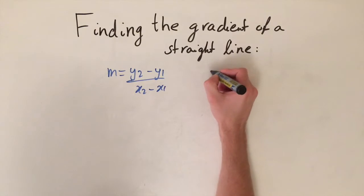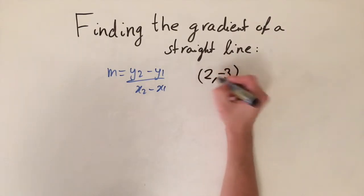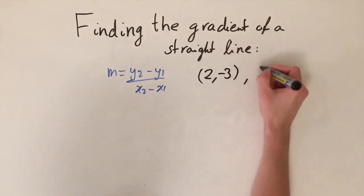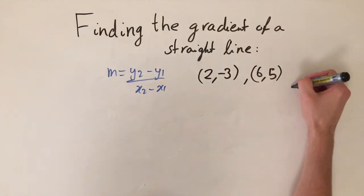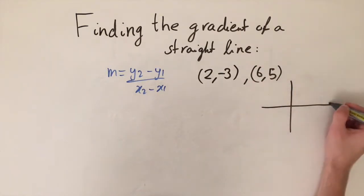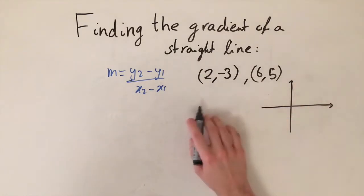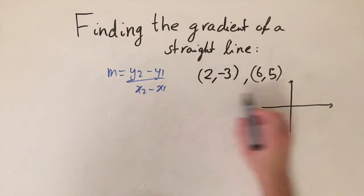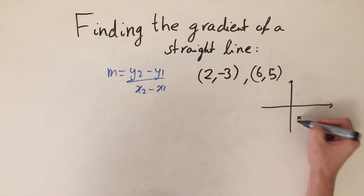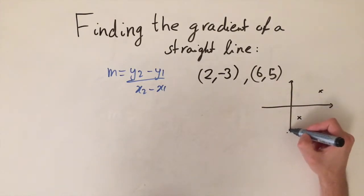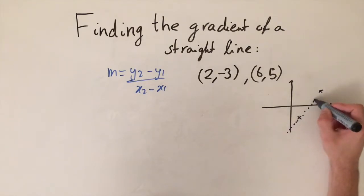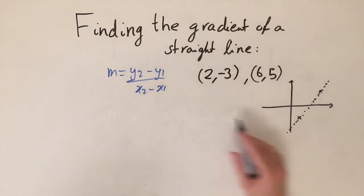Let's do another example. We will do (2, -3) as the first point and (6, 5) as the second point. So again, we can think about what this looks like on a graph if you prefer thinking about it graphically. So we have this first point (2, -3), that's going to be somewhere around here, and then (6, 5) somewhere around here.